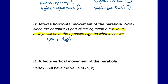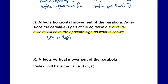The k value affects the vertical movement of the parabola — going up or down. The vertex will have the coordinates h and k, so whatever those h and k values are, those will be the coordinates of our vertex.